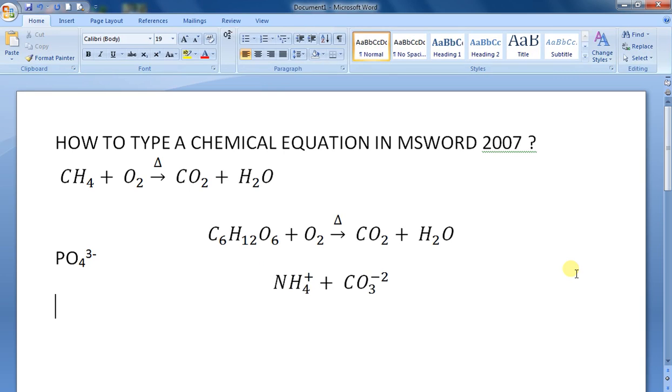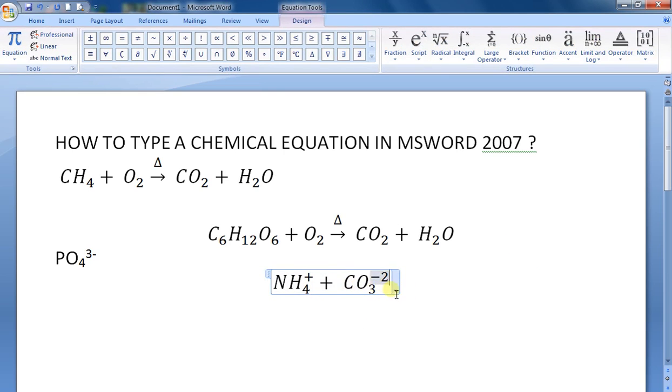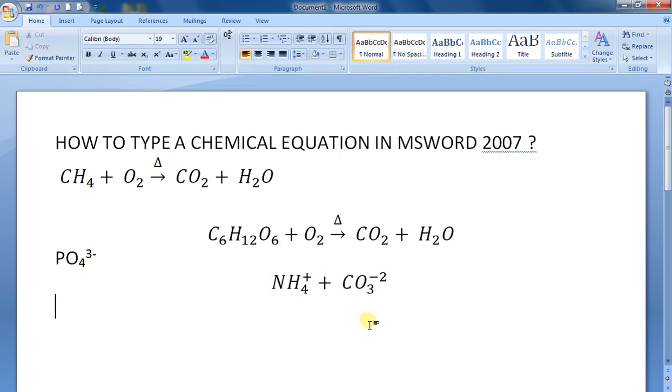So to summarize typing superscripts in the equation editor: you type the caret symbol followed by the number, then press space bar. That's it.